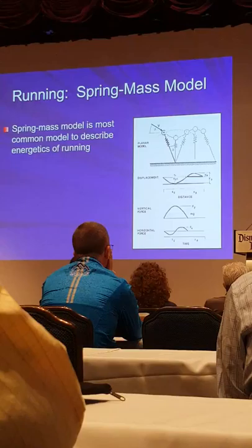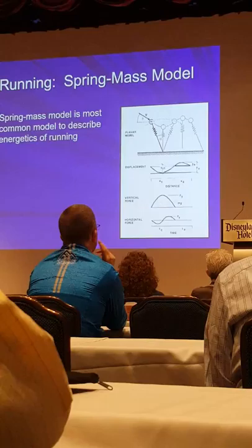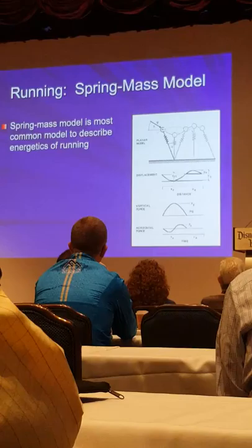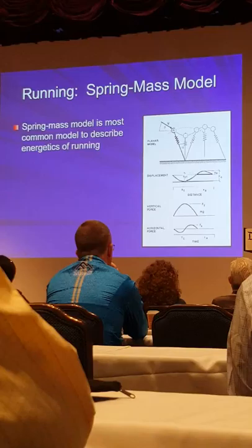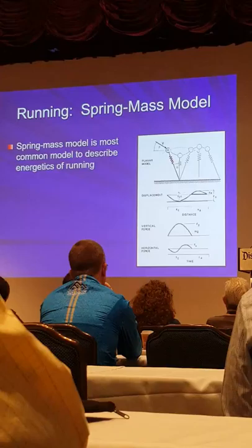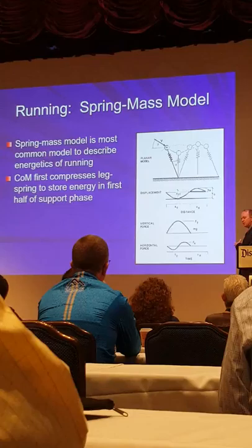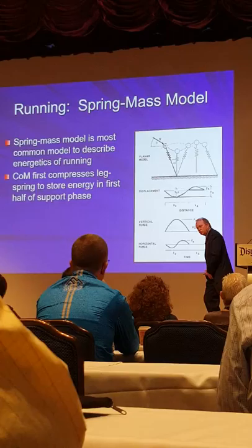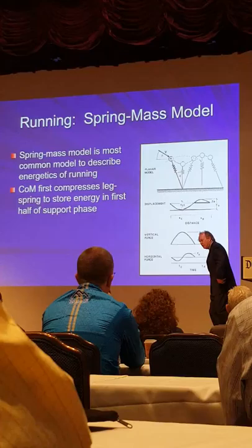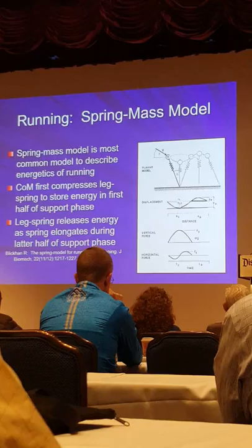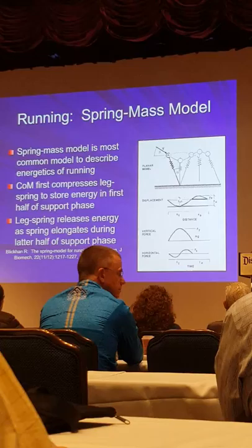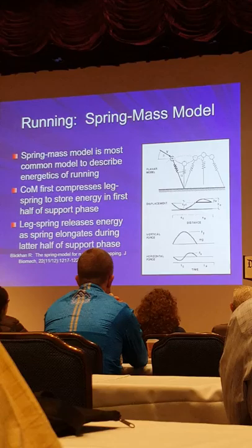Running, however, is very different from walking. Running is best modeled using what we call a spring mass model — a mass representing our center of mass sits over a spring representing the leg, thigh, knee, ankle, and hip. When we hit the ground in running, the body compresses the leg spring, storing elastic strain energy within the muscles and tendons, and then we spring up by releasing this kinetic energy, moving up and over to the next footstep.